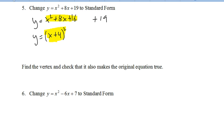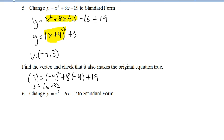Now, the highlighted pieces are the same. I subtract 16 over here to balance things out. So this is plus 3. That means my vertex is going to be negative 4. Negative 4 gives me 0 squared. And that leaves me with y equals 3. Throw it into our original. And that's true.